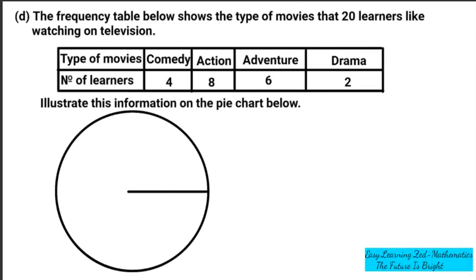Question D is as follows: the frequency table below shows the type of movies that 20 learners like watching on television. You can see the frequency table — we have 'type of movies' and 'number of learners'.